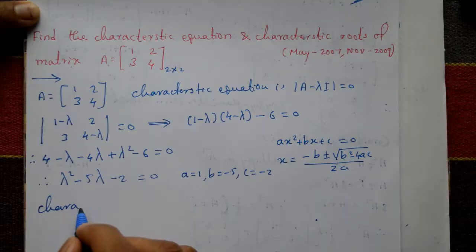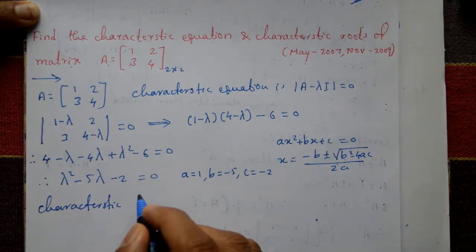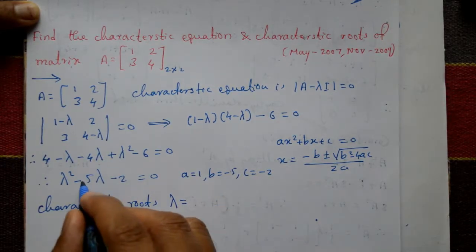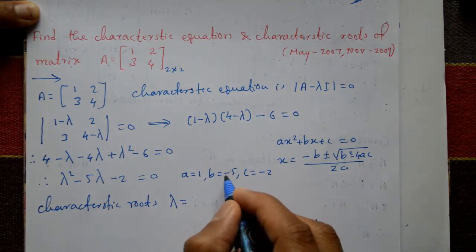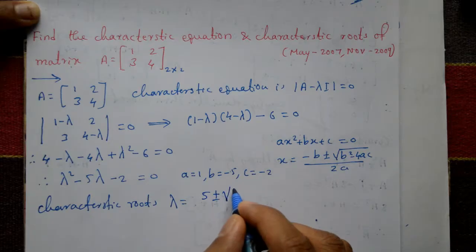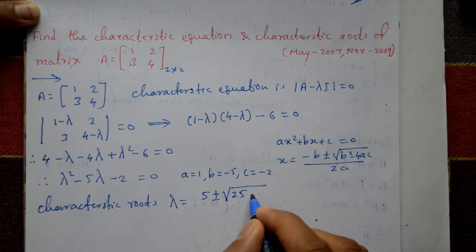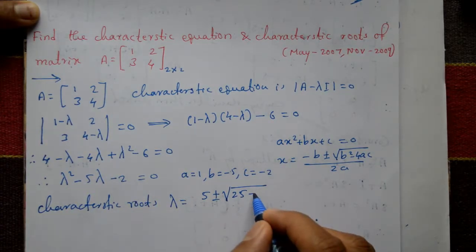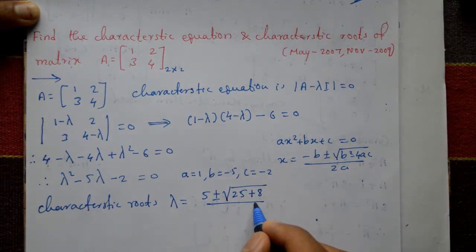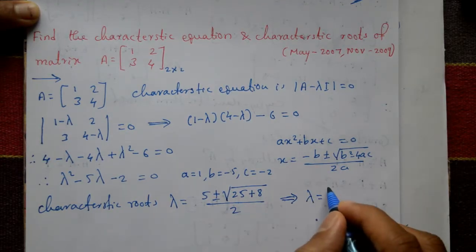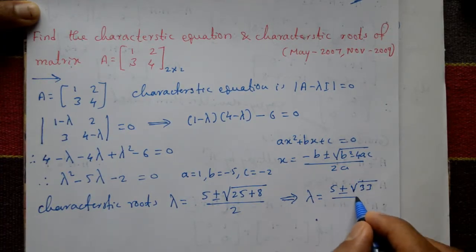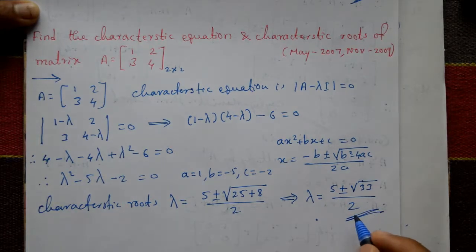The characteristic roots are: lambda equals minus b — where b is minus 5, so minus of minus 5 is plus 5 — plus or minus square root of b squared minus 4ac, which is 25 minus 4 times 1 times minus 2, giving 25 plus 8 equals 33, divided by 2a where a is 1. Therefore, lambda equals (5 plus or minus square root of 33) divided by 2. These are the required characteristic roots.